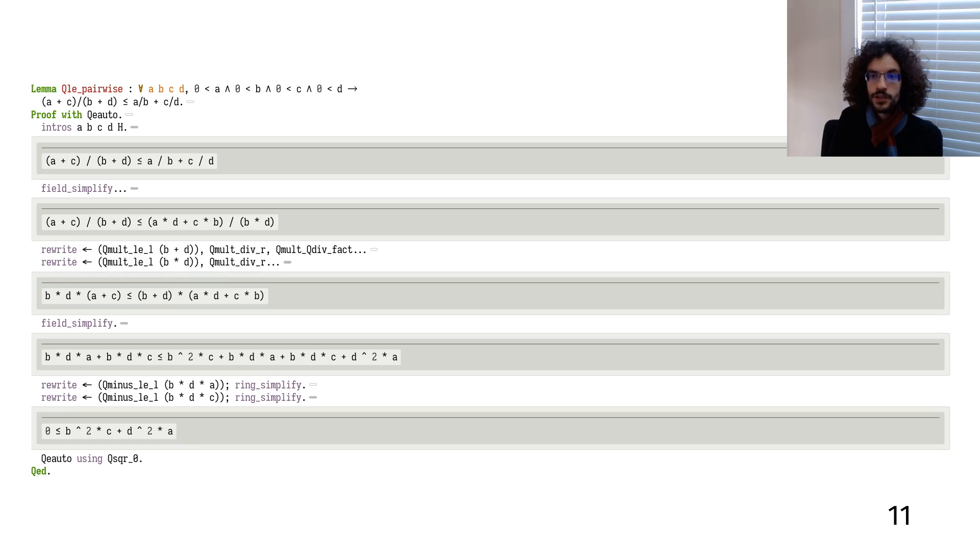Every time I make changes to the Coq file, I can rerun Alectryon, and it will update the visualization. And because all outputs are recorded, browsing through the proof is instantaneous. There's no need to load a copy of Coq in your browser.